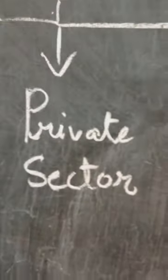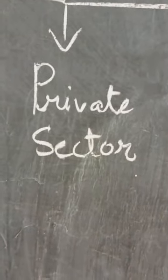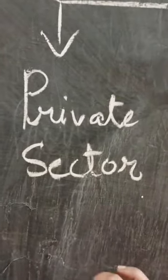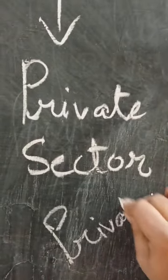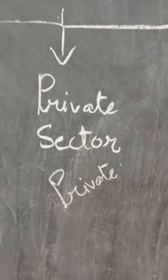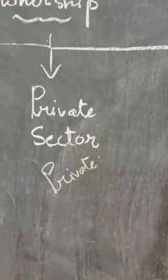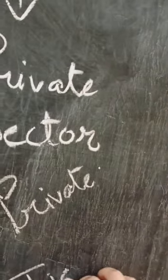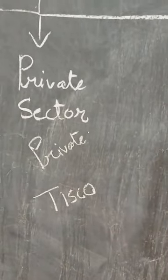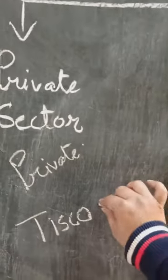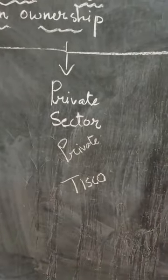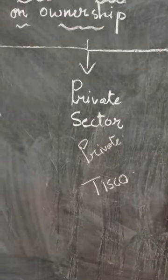Now about the next sector, that is the private sector. In the private sector, the ownership of the industry is in the hands of private individuals — any organization, or some people who establish the industry. For example, TISCO, that is Tata Iron and Steel Company, is a privately owned company. The ownership in such industries is in private hands, with no government interruption.